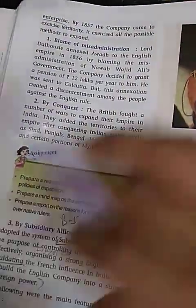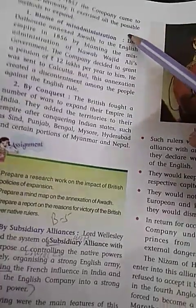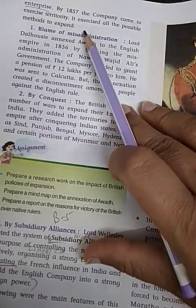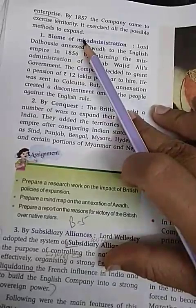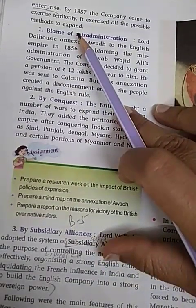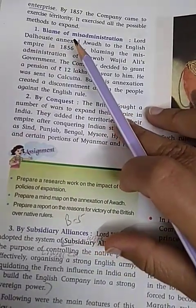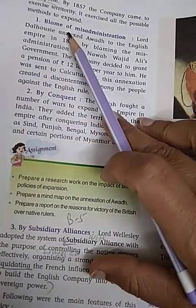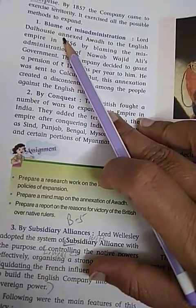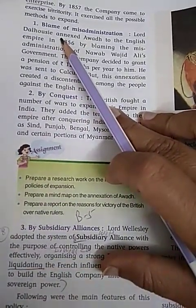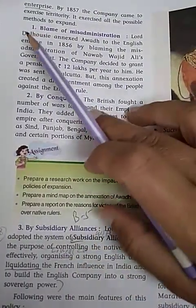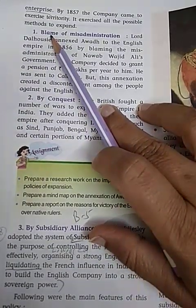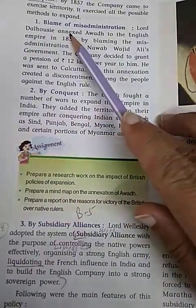By 1857, the company exercised all possible methods to expand its control over the land portions of India. The portions not yet under company control were brought under their rule through various methods. A likely exam question: write down the methods adopted by the company to expand their control over territories.